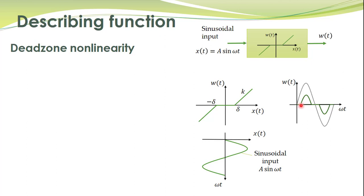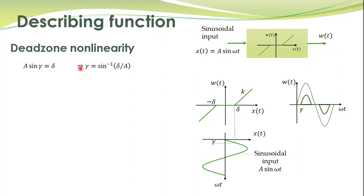How do we find this value of time ωt? Let's call it gamma. Gamma is the time instant when the input becomes equal to delta. So we can write: A sin(γ) = δ, and from that we find gamma: γ = sin⁻¹(δ/A).